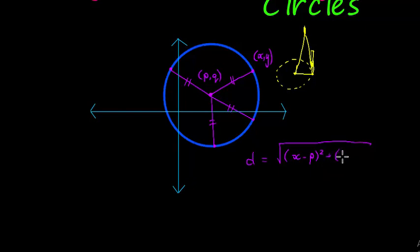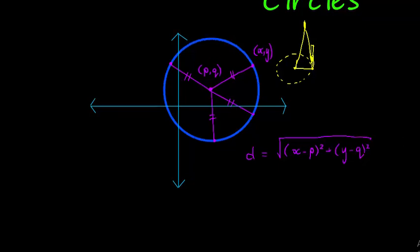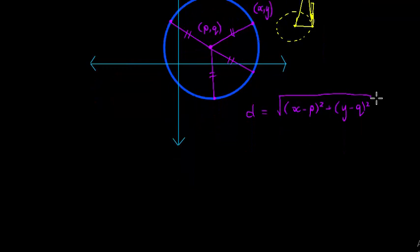Plus the y value minus the y value of the center squared. And now just so that we don't have to work with the square root, let's just square both sides to get rid of that square root. And then instead of calling this the distance, we're going to call it r, the radius.